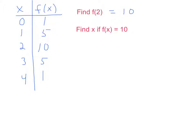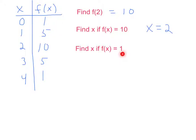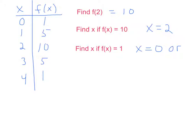Now let's find x if f of x is 10. The 10 is f of x, so it's the output. We find 10 in the output column and look back to see the corresponding input: x equals 2. Now let's find x if f of x is 1. The 1 is the output, so we find 1 in the output column — it occurs in two places. So x could equal 0 or x could equal 4.